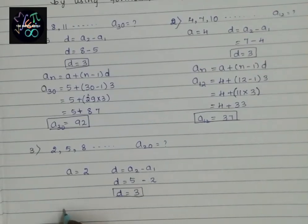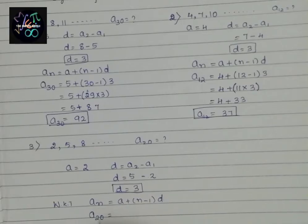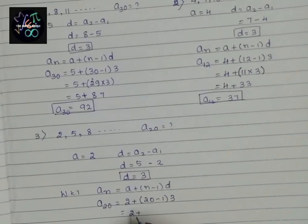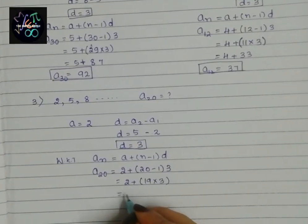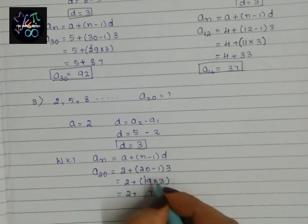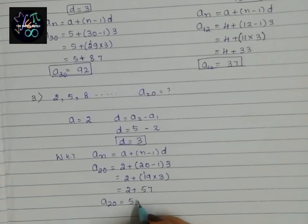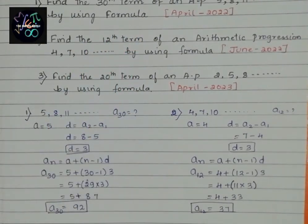Using the formula A_N equals A plus (N minus 1) times D, we find A20 equals 2 plus (20 minus 1) times 3, which is 2 plus 19 into 3. 19 times 3 is 57, so 57 plus 2 equals 59. Therefore A20 is 59. This is how we solve questions when they ask to find a specific term of an AP.